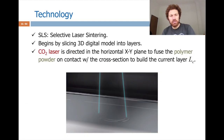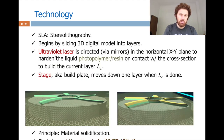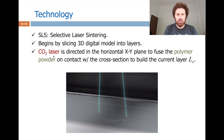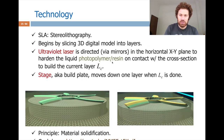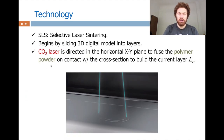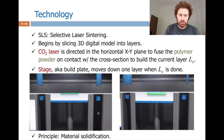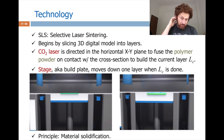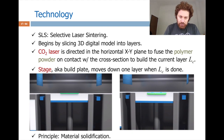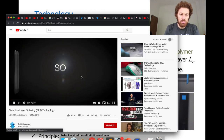SLS — Selective Laser Sintering — is quite similar to SLA. The main difference is that instead of a liquid resin (photopolymer), it uses a powder. The laser type also changes to a CO2 laser. Wherever the laser beam hits, that part of the powder gets solidified. The build plate moves down one layer when that layer is done. This can be summarized in two words: material solidification.